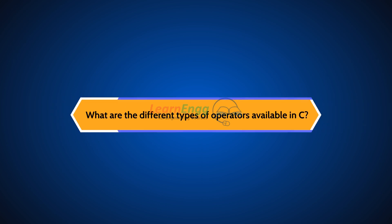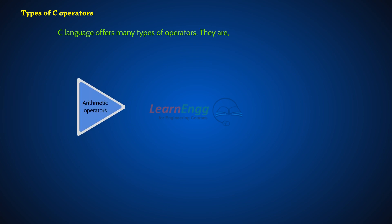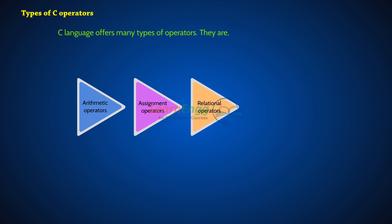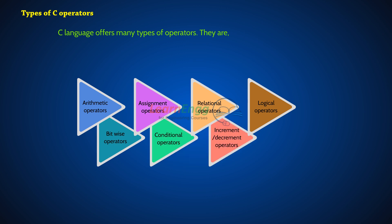What are the different types of operators available in C? C Language offers many types of operators. They are: Arithmetic Operators, Assignment Operators, Relational Operators, Logical Operators, Bitwise Operators, Conditional Operators, Ternary Operators, Increment or Decrement Operators, and Special Operators.